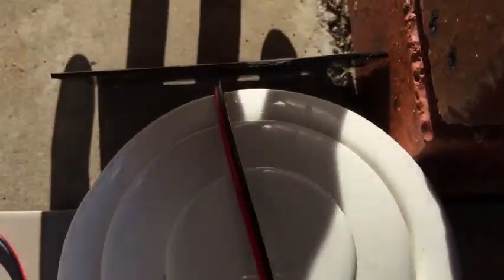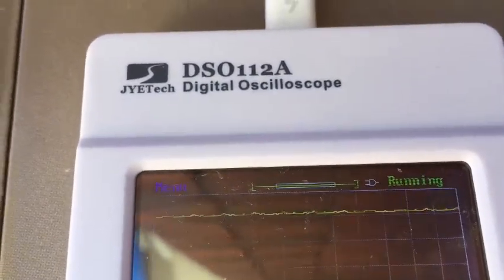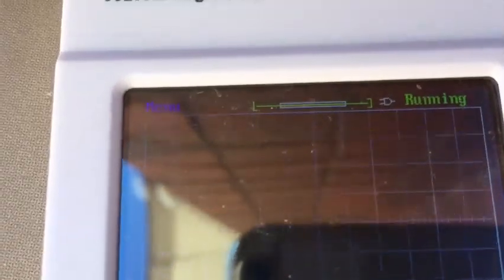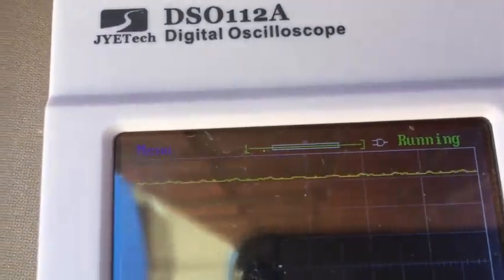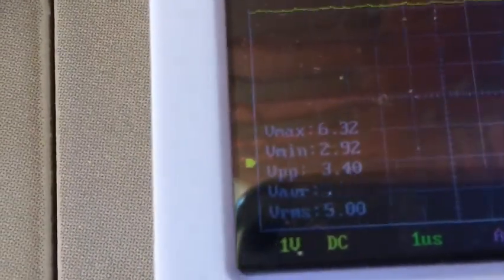And I put the hand and I cover the solar panel like this and see the ripple. I'm covering. Not much ripple. It's around 5 volt when we see the values.